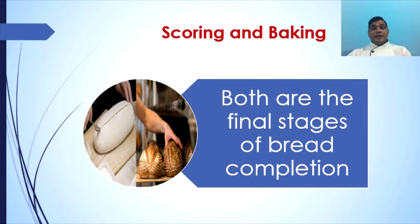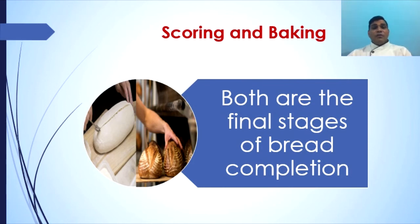Scoring and baking are the final stages of bread completion in the oven. Cutting or scoring: a break on the side of a loaf is caused by continued rising after the crust is formed. To allow for this expansion, the tops of hard-crust breads are cut before baking. Scoring is also used to give designs on the bread.